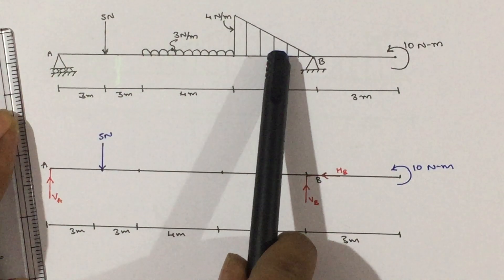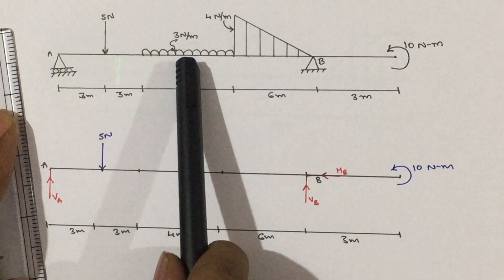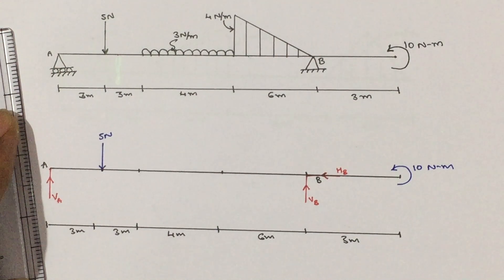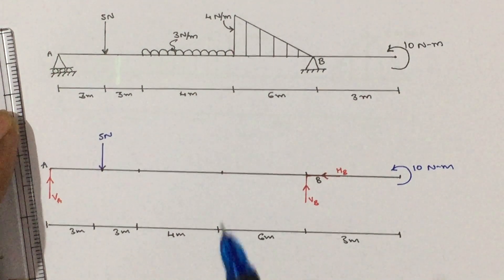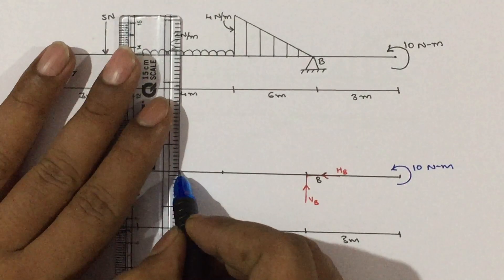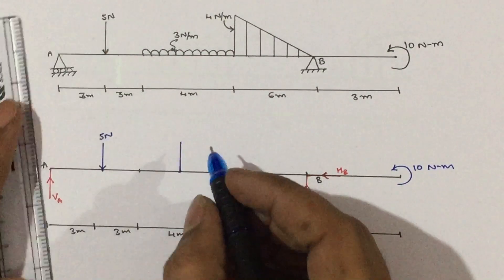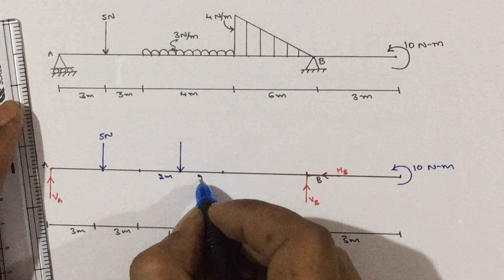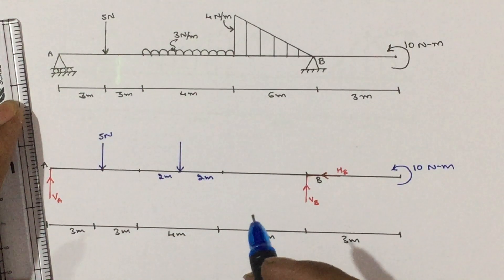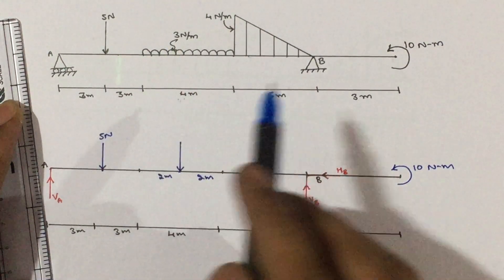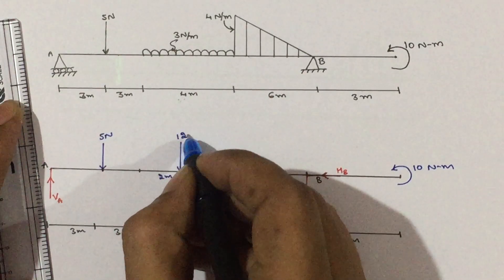If it is a UDL or UVL, convert it into a point load. To convert the UDL, keep two things in mind: where it will act and how much it will act. It acts exactly at the centre. The 4 meter span gives 2 meter from each side. The magnitude is load intensity multiplied by distance: 3 multiplied by 4 equals 12 Newton.